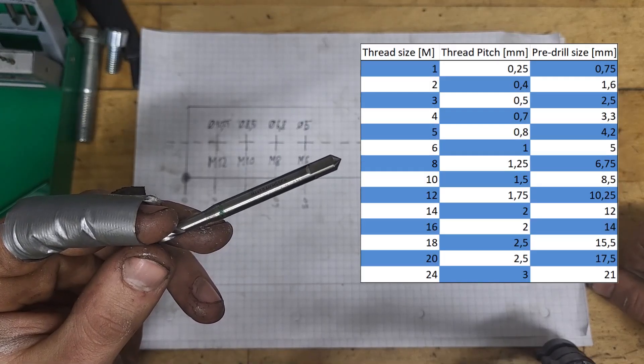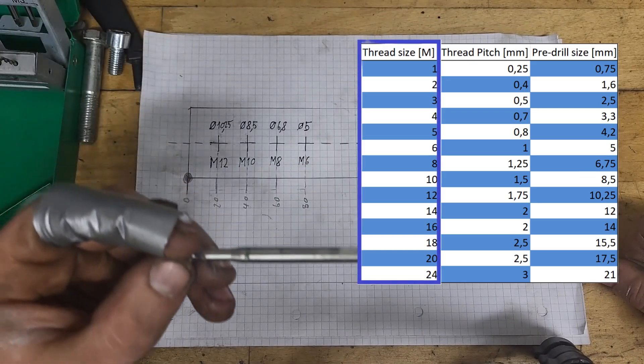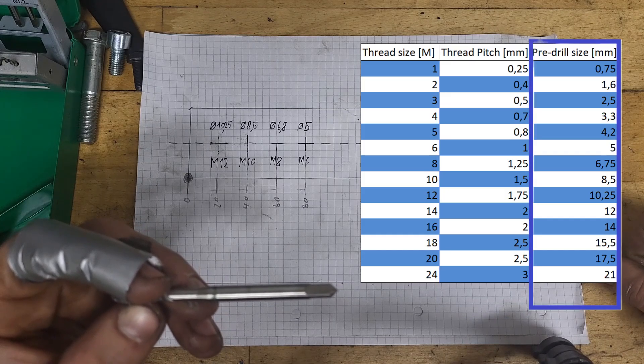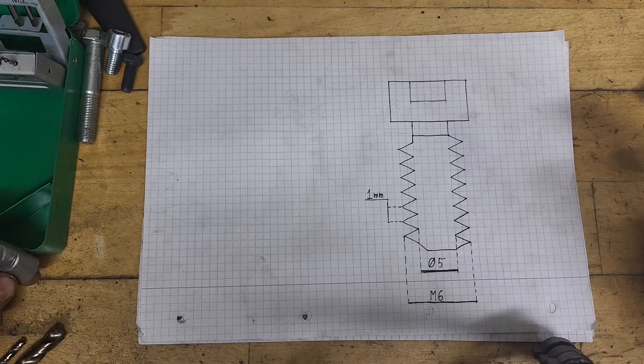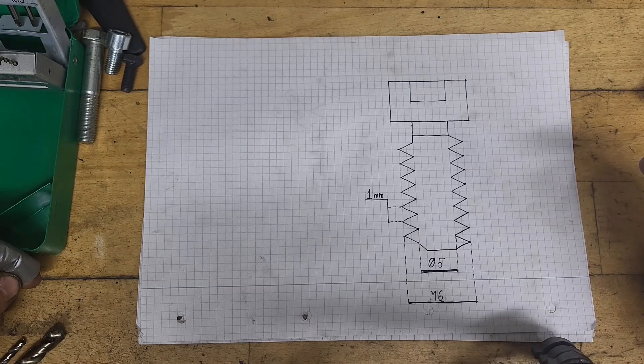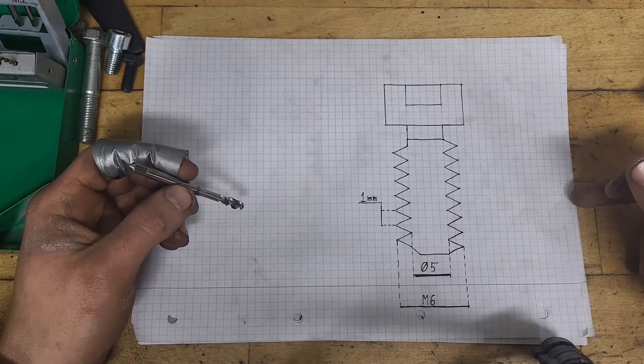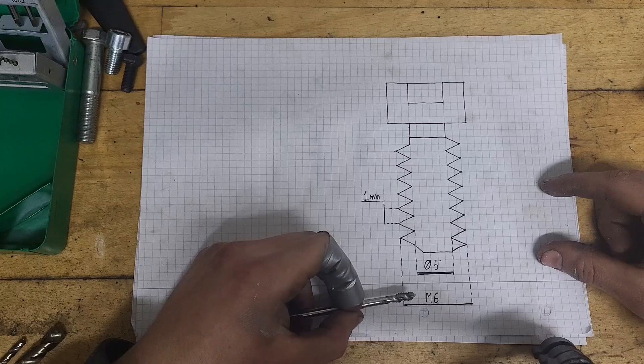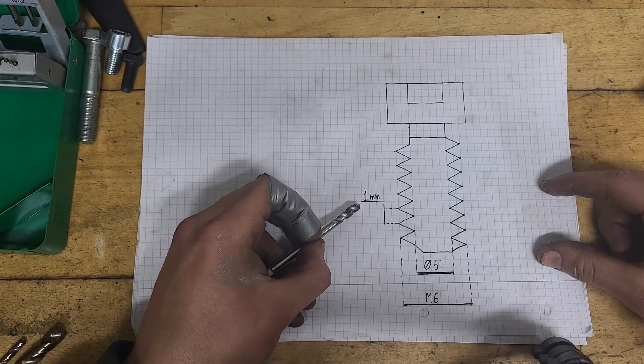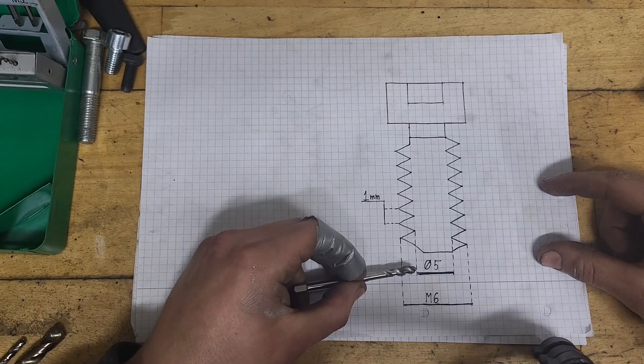As you can see on the table to the right, we have a list of threads paired with a thread pitch and a pre-drilling hole size. Just to make everything a bit easier, I have timestamped the thread table so you can click back at any time. Now let's take the M6 thread as an example. On the table, you saw that the M6 had a thread pitch of 1 millimeter and a pre-drilling hole of 5 millimeters.